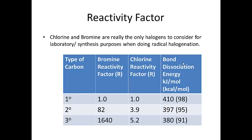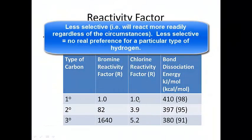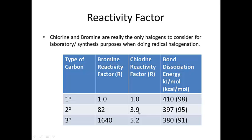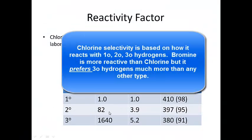To empirically determine product distribution, we need the reactivity factor. For bromine and chlorine — the only halogens we'll discuss for radical chain reactions — the reactivity factor gives the likelihood of the halogen abstracting a hydrogen on a primary, secondary, or tertiary carbon. Bromine is highly reactive at tertiary sites and very selective. Chlorine shows less difference between secondary and tertiary abstractions, making it much more reactive but less selective.